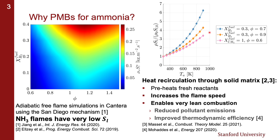You have in pink a reference curve for a methane-air flame, and then in orange and blue two curves for two ammonia-hydrogen flames. As you can see, preheating these fresh reactants increases the flame speed quite a bit, even more than it would for a methane flame, and thus would hopefully allow combustion to be performed at very lean conditions where normally ammonia-hydrogen mixtures have a very low flame speed. This is beneficial because it allows reduction of NOx emissions and also improves the thermodynamic efficiency of Brayton cycles.